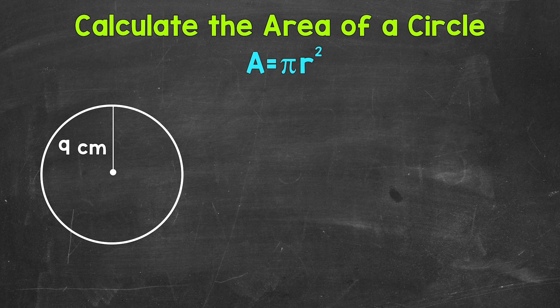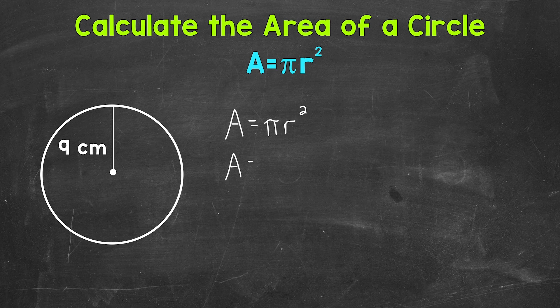Let's jump into our example where we have a circle with a radius of 9 centimeters. The first thing I'm going to do is write out the formula for the area of a circle: area equals pi r squared. Then I'm going to plug in the radius — area equals pi times 9 centimeters squared. After that, let's do 9 squared, which means 9 times 9, not 9 times 2.